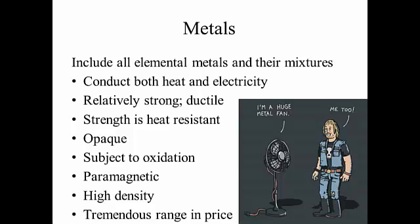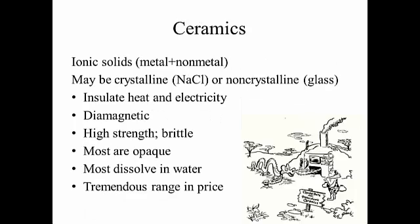Most metals are opaque. Most of them — not all — may oxidize, rust, or whatever word you have for that. Many of them are paramagnetic, meaning they have some susceptibility in a magnetic field; some of them are actually used as permanent magnets. Metals have high densities and are mostly pretty expensive because many of them are rare. There's a large range in pricing, with the more expensive ones like gold and silver being quite apparent.